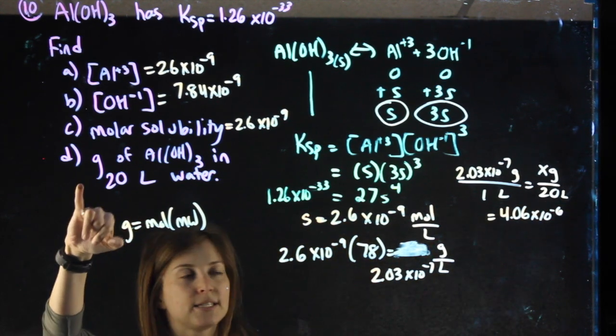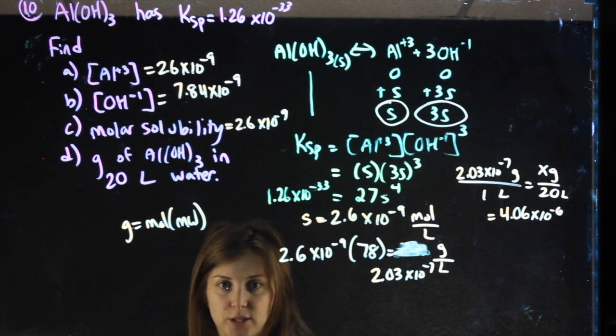So ultimately for part D, I had to multiply by molecular weight and multiply by 20. It doesn't matter what order you did that in.